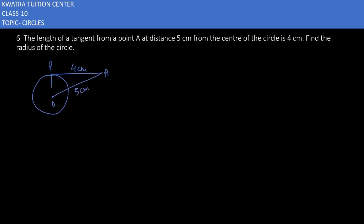Then you can join OP. And we have to find the radius of the circle, that is OP. So how will you find OP? You can use Pythagoras theorem, because we know that the point of contact between the radius and the tangent is 90 degrees.